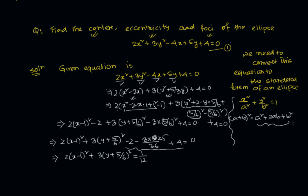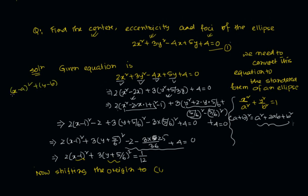Now we take the help of translational transformation, meaning we shift the origin. We are changing the direction of the coordinate system by shifting the origin. The translational transformation is x′ = x − α, y′ = y − β.